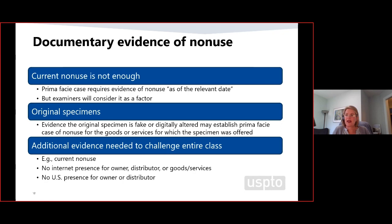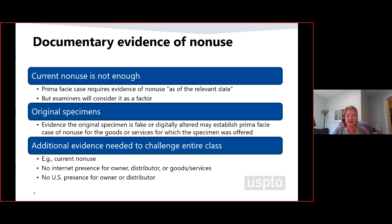Moving to challenging the entire class: let's say you have a fake specimen with good evidence of digital alteration. Add to that evidence of current non-use, lack of U.S. presence of that owner, lack of an Internet presence at all for the mark or owner — particularly if we're talking about consumer goods typically sold online — that as a whole may establish a reasonable predicate of non-use as to the entire set of challenged goods and services. Just giving us the bad specimen isn't going to be enough to challenge the whole class; you've got to give us more evidence that raises an inference of non-use on all goods and services.